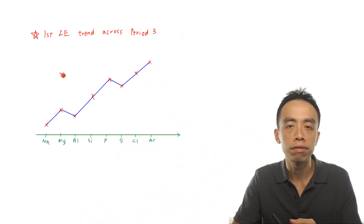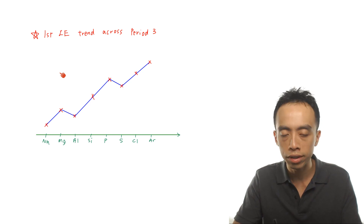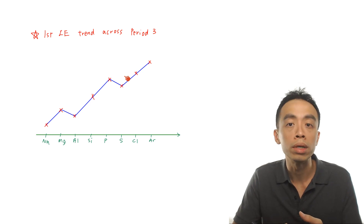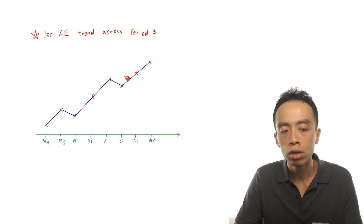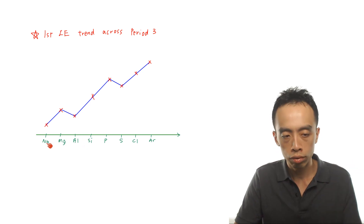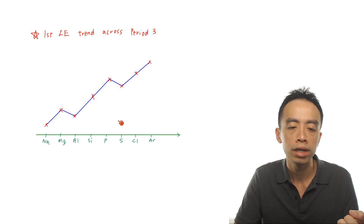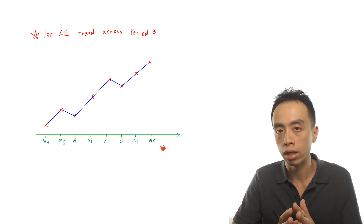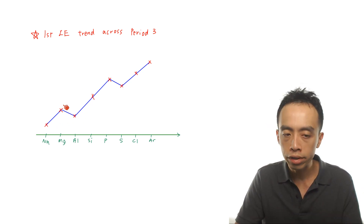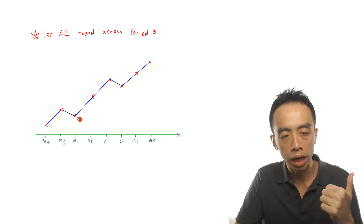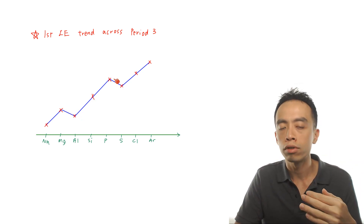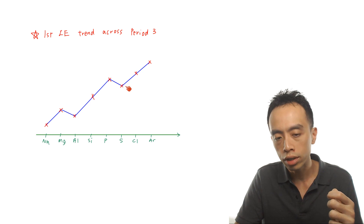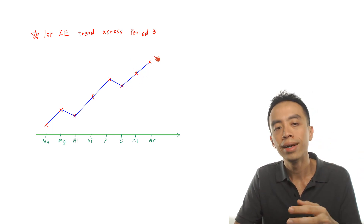The first ionization energy trend across period 3 elements is given here. We need to roughly know the IE trend because we need to be able to explain a few things involving this particular trend. We have our elements across period 3: sodium, magnesium, aluminum, silicon, phosphorus, sulfur, chlorine, and argon. In terms of the ionization energy, from sodium to magnesium it increases, but there's a slight dip from magnesium to aluminum. Then from aluminum to silicon to phosphorus it increases further. From phosphorus to sulfur, again there's a slight decrease. Then it increases further for chlorine to argon.